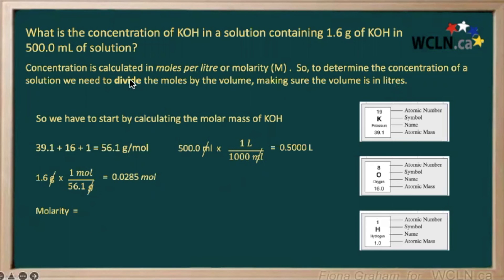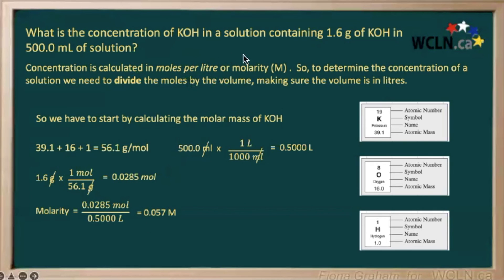All we need to do is divide the amount of moles we have by this volume. That gives us 0.057 — that would be the molarity, the concentration of this particular solution.